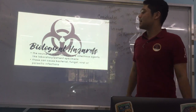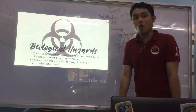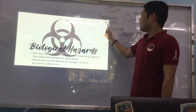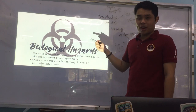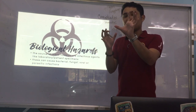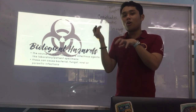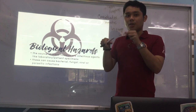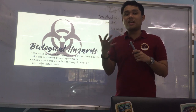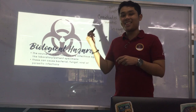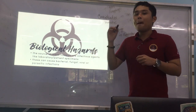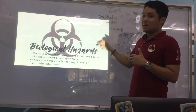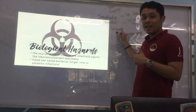Coccidioides immitis is the most harmful biological hazard to laboratory personnel because it releases spores. In the lab, if you have plates where Coccidioides immitis is cultured, they should be taped around the corners so that spores cannot be inhaled by lab personnel.